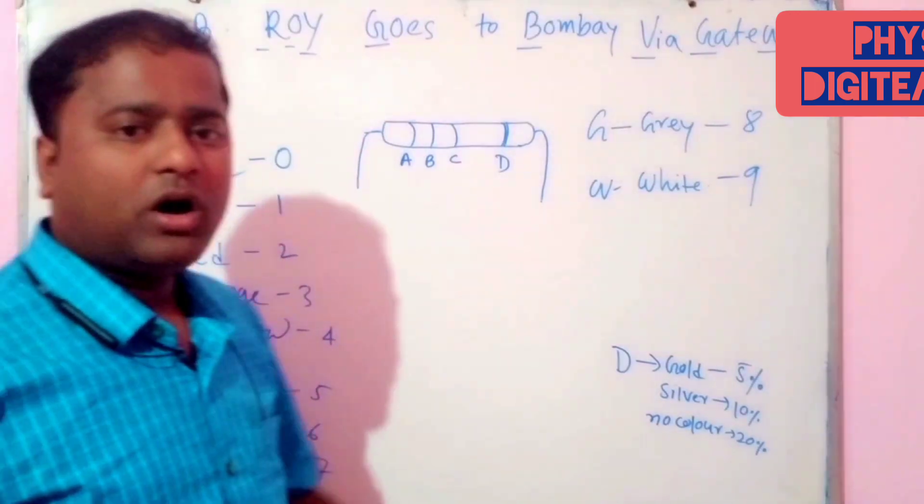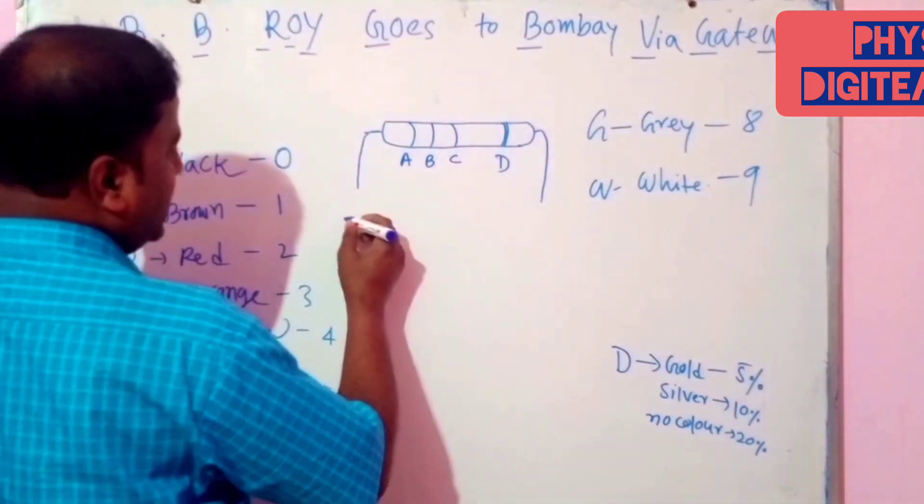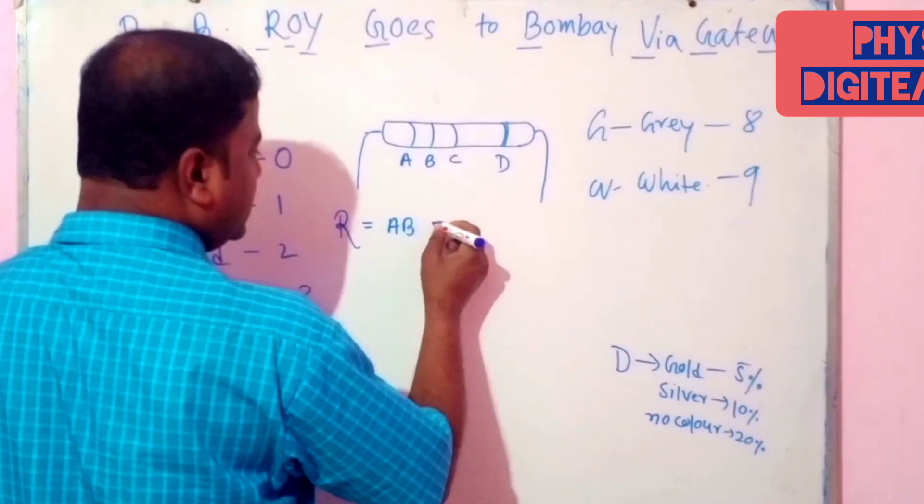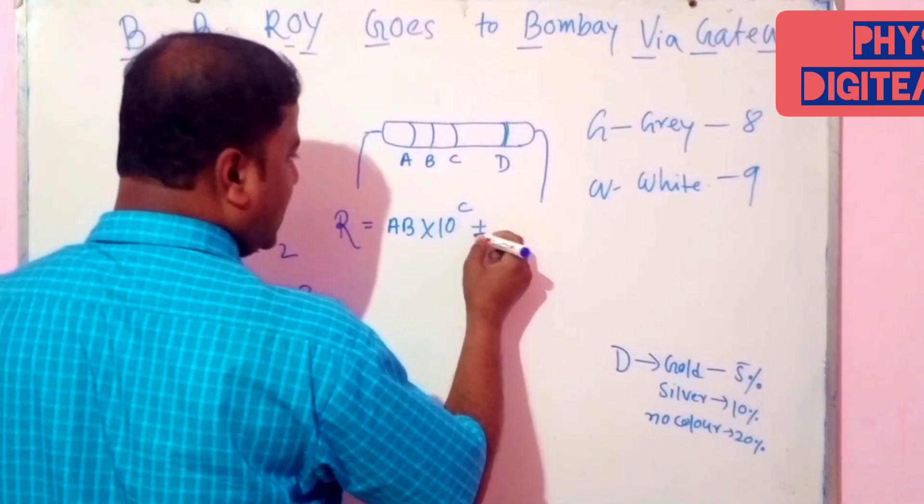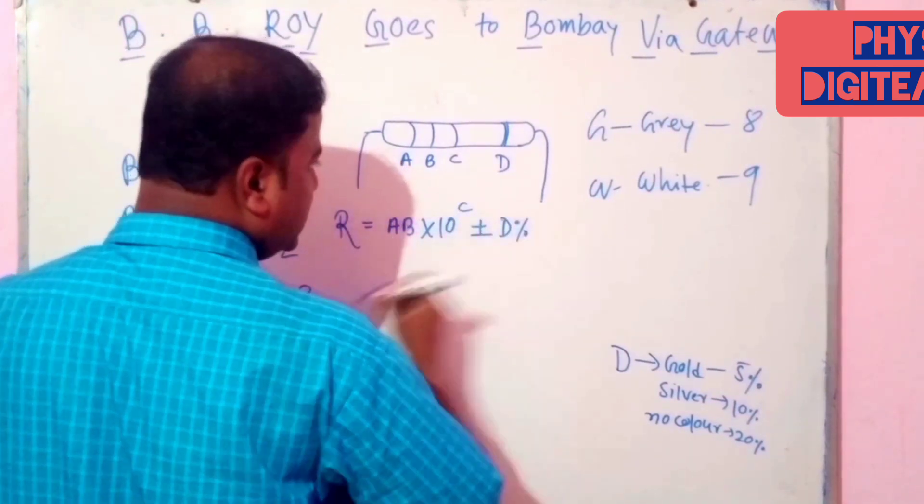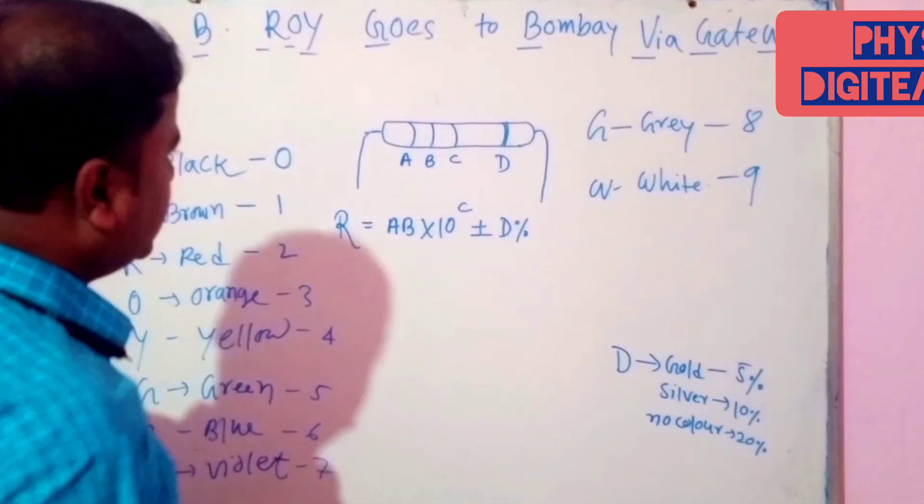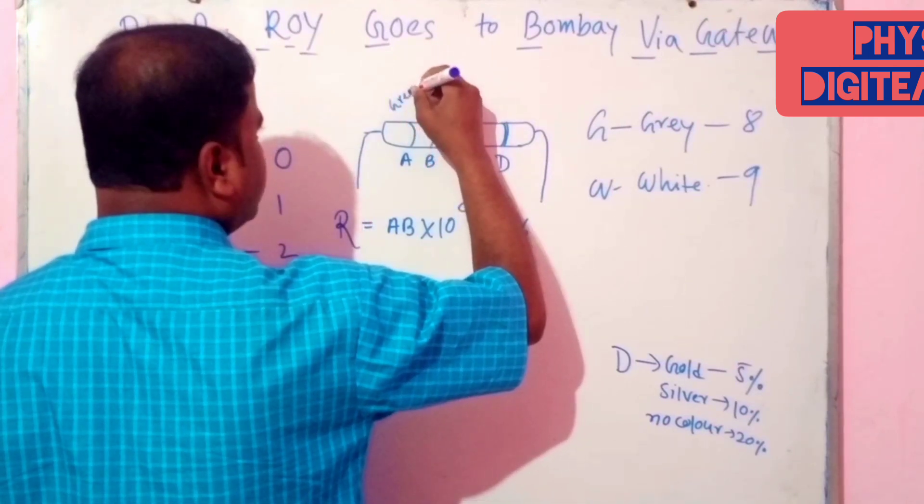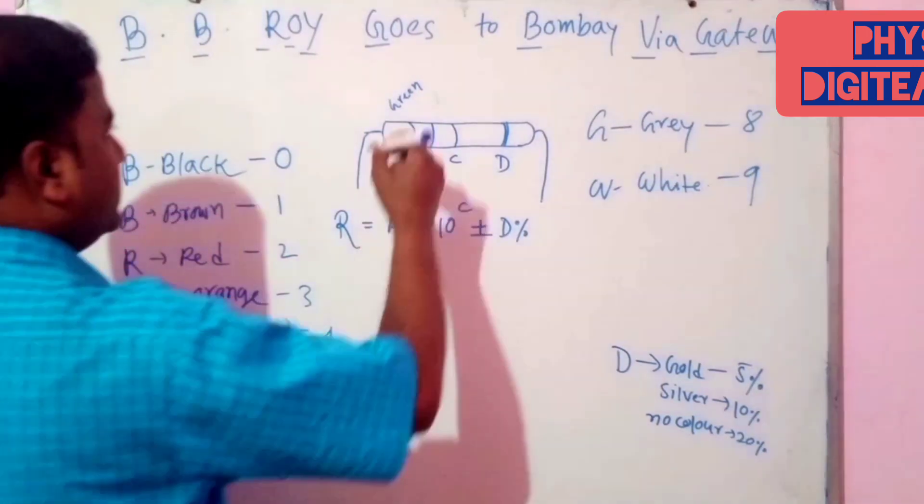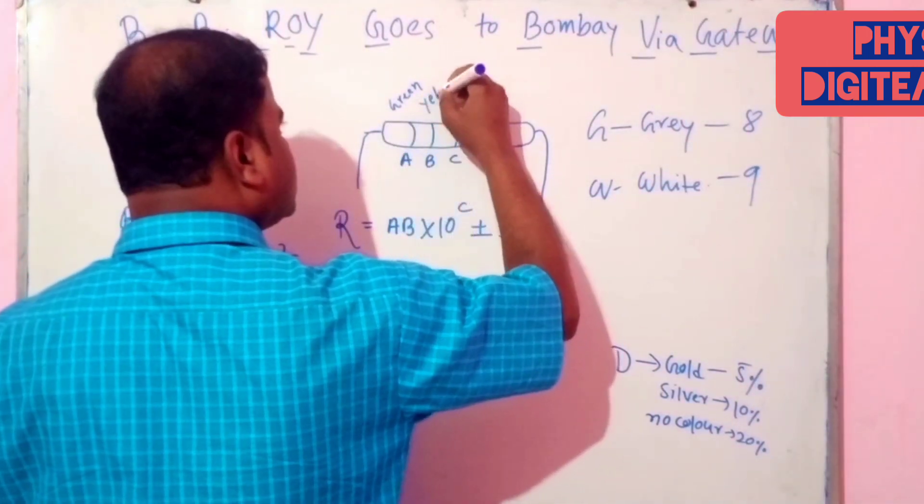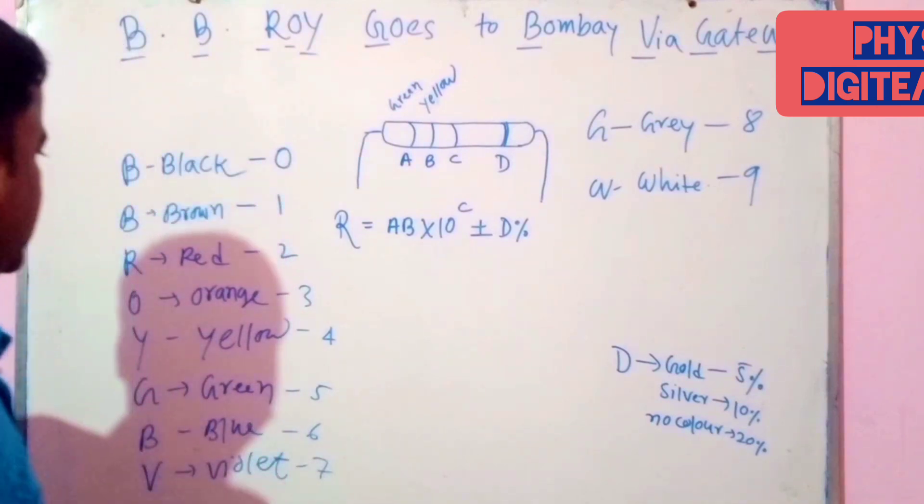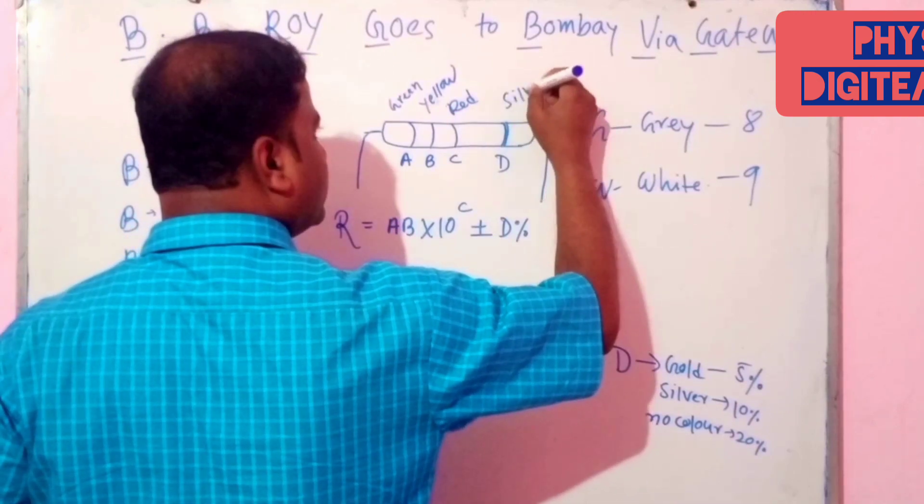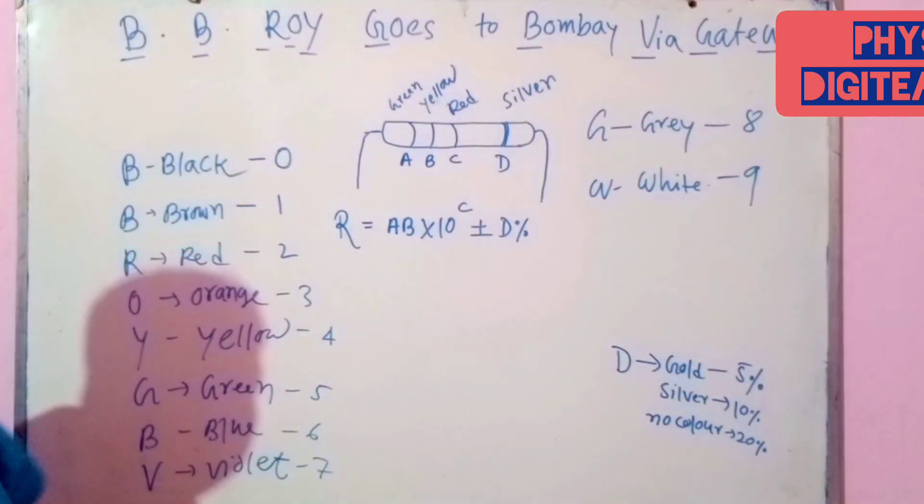Now, how to calculate the value of carbon resistance? Here, first we write, A B into 10 to the power C, plus minus D. This is first sentence. Now, say the first color band is green, and then yellow. C is red, and this is silver. Then, what will be the value of resistance?